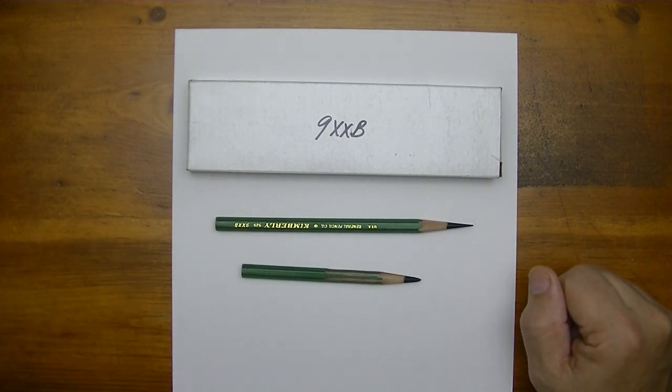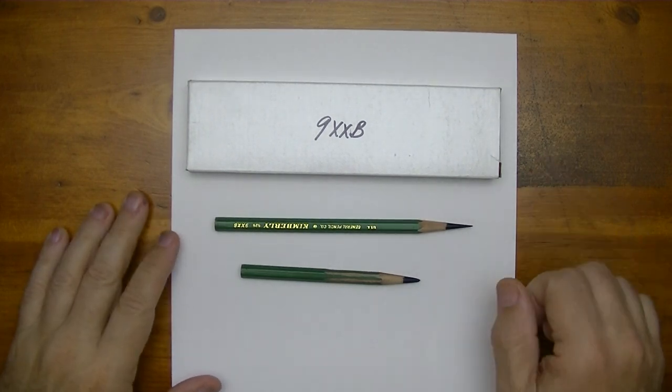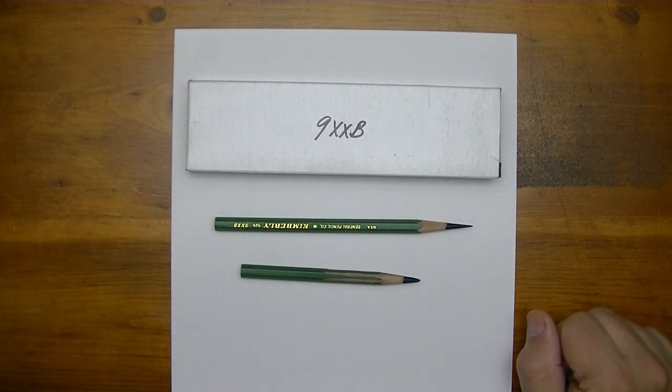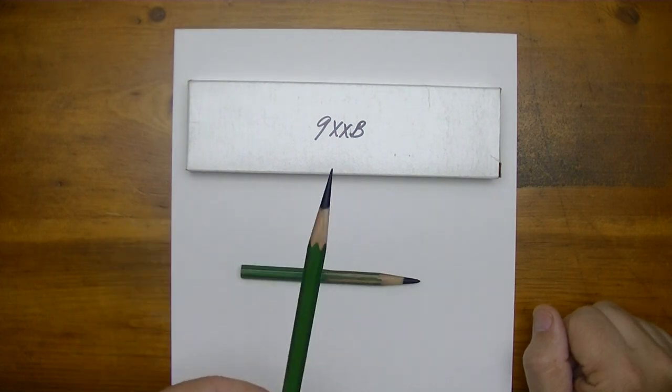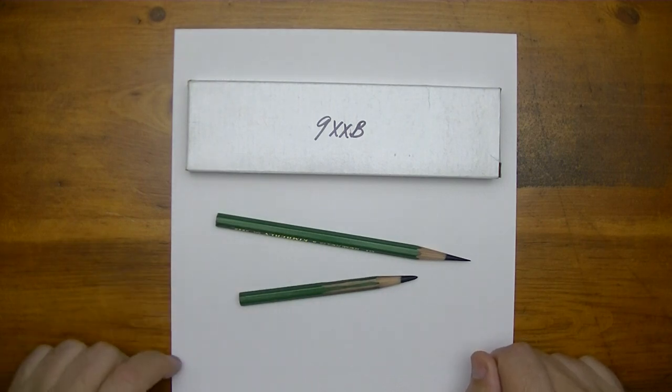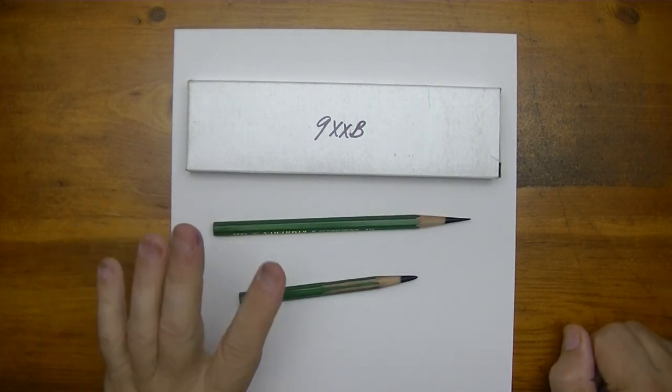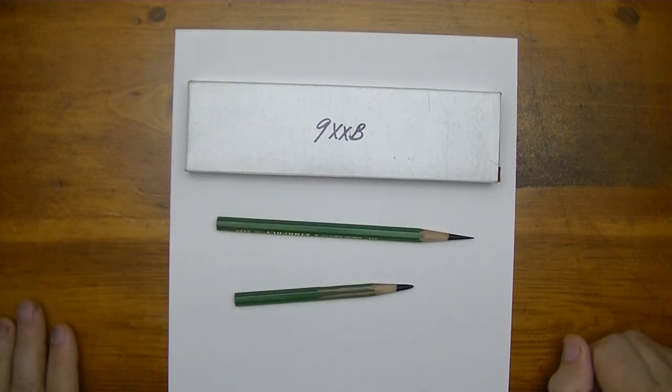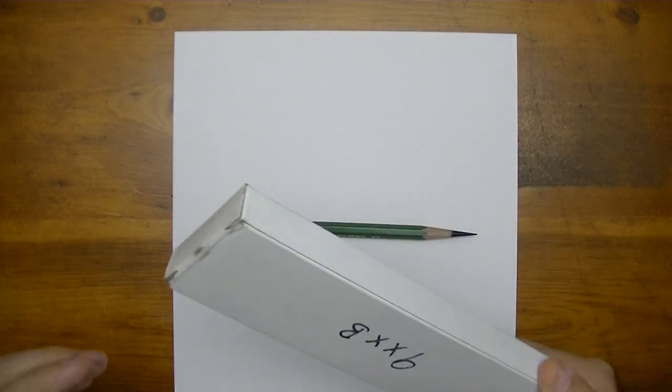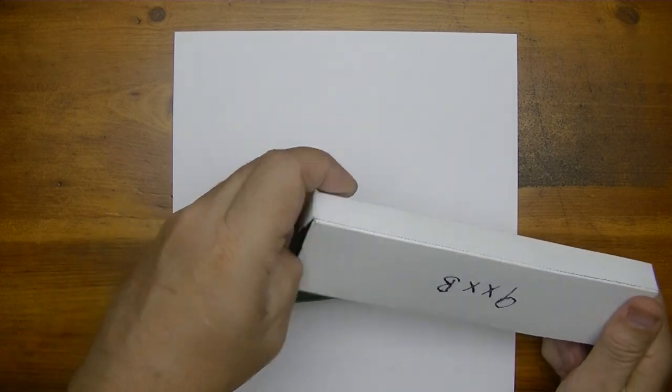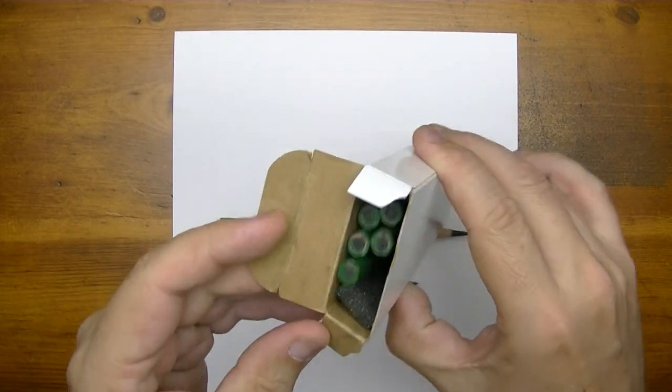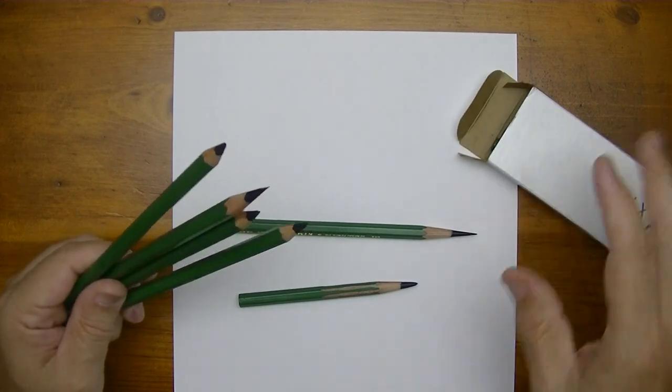After some back and forth, I decided you know what, I'm going to make a video where we're going to find out which one of these pencil sharpeners, and I have a whole lot of them, created this point. Now one thing that dawned on me through the conversation was that it had to have been an electric, so I'm going to start with the electric first and I may end with the electric. We'll see as this video progresses. I've got my supply of 9xxBs here and this is all I have left, what's in this box, which looks like I got just six more in here.